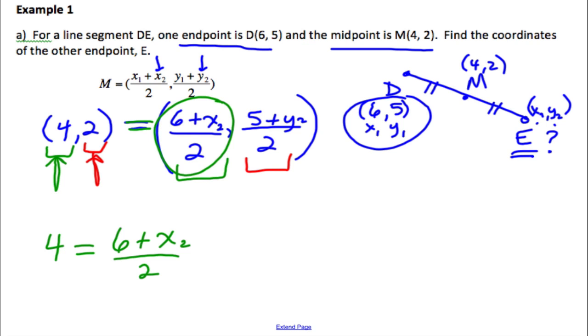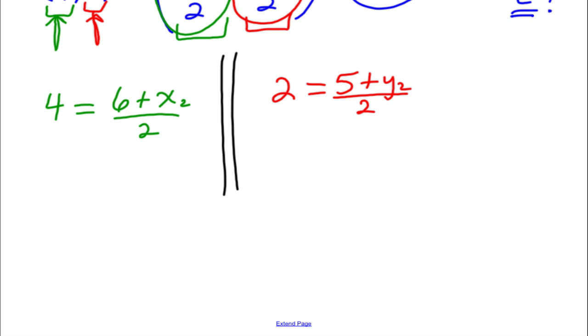I'm going to take the 2 and I'm going to set that equal to the Y part. The Y value, 5 plus Y2 divided by 2. So this is what I mean. We can kind of divide up our page into two parts. We're just dealing with X and we're just dealing with Y. So once I do that, it becomes a simple solving equations problem.